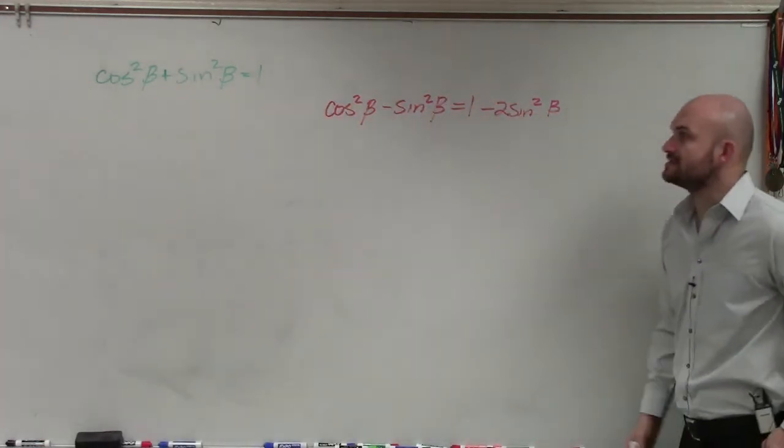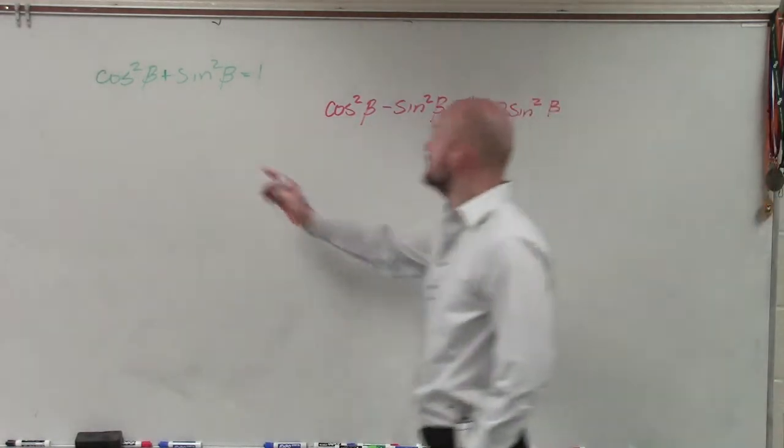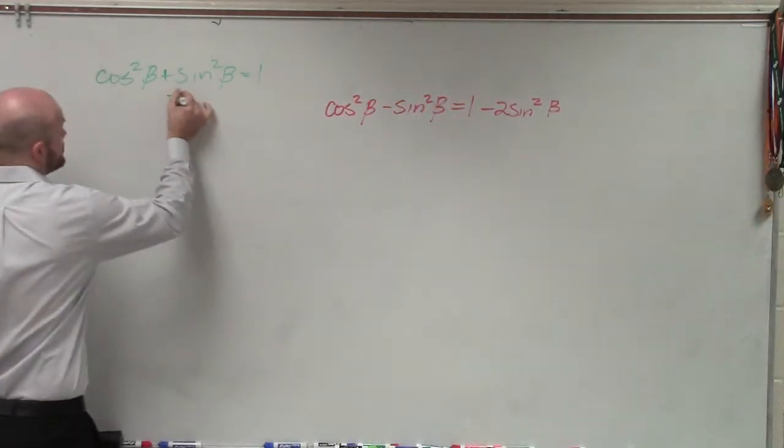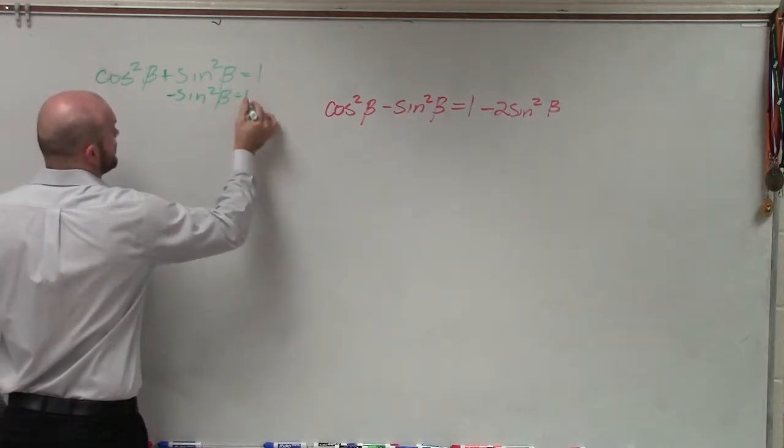If I want to write cosine in terms of sine, I'll have to solve for cosine. I'll subtract sine squared of beta from both sides.